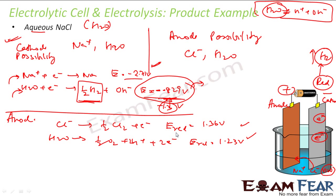This is reduction potential. But at the anode, oxidation is happening. So instead of reduction, let me take oxidation potential here to make things easy.